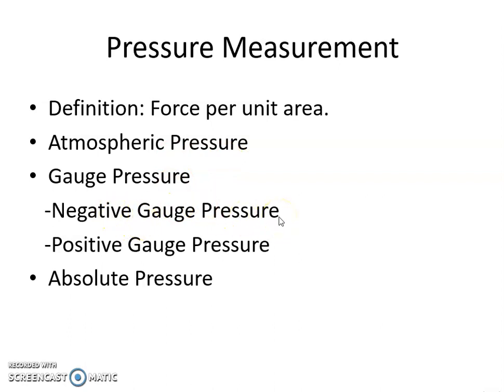If the pressure measured is below the local atmospheric pressure, then the pressure is called as negative gauge pressure. And if the value of the pressure of the liquid is above the local atmospheric pressure, it is called as positive gauge pressure.